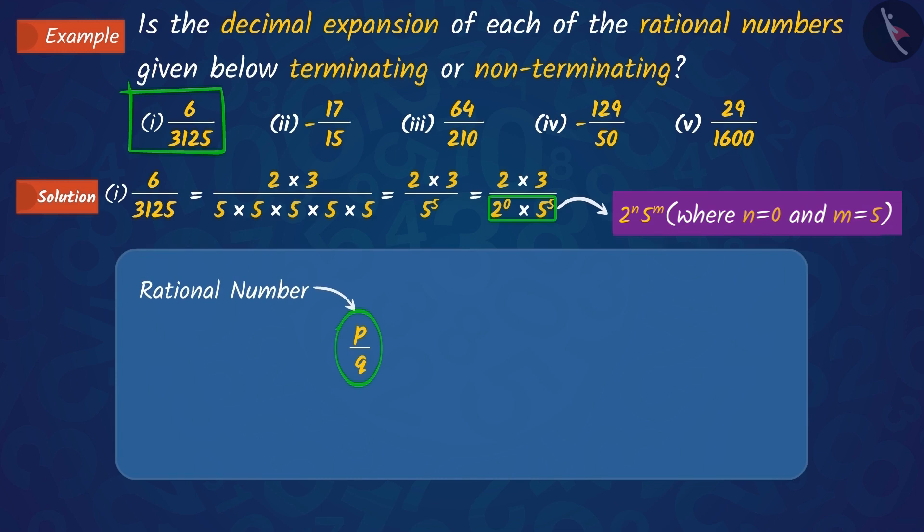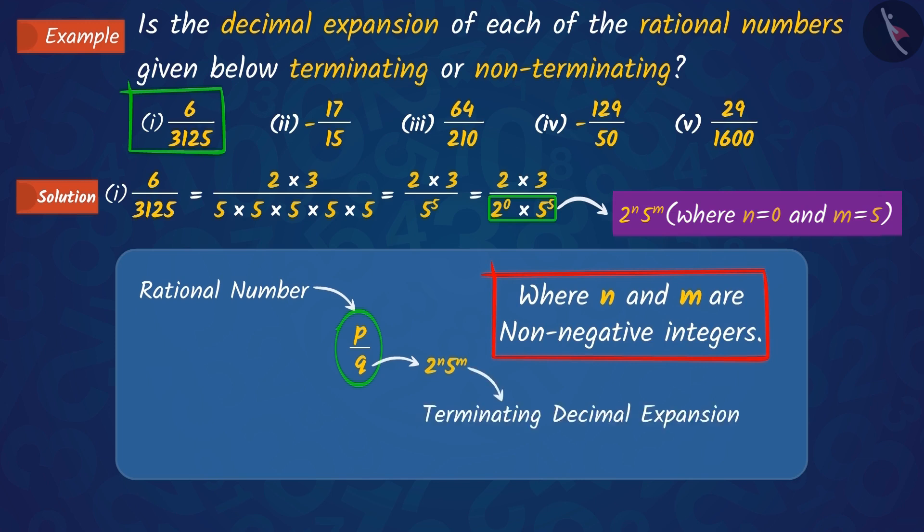In our previous video, we learnt that in a rational number p upon q, if q is in the form of 2 raised to n into 5 raised to m, where n and m are non-negative integers, then the decimal expansion of the number is terminating.